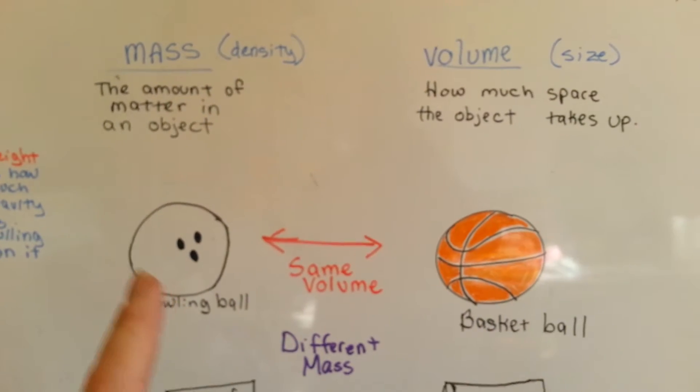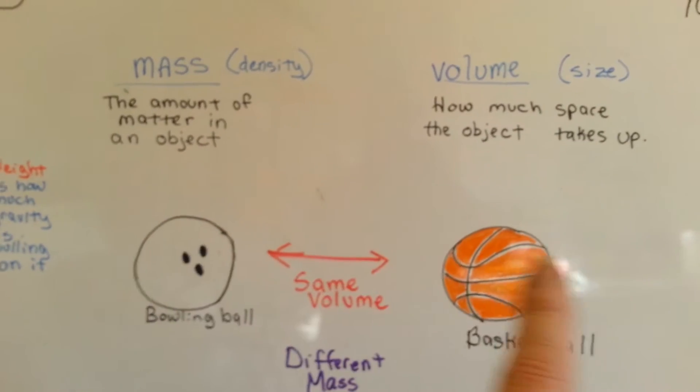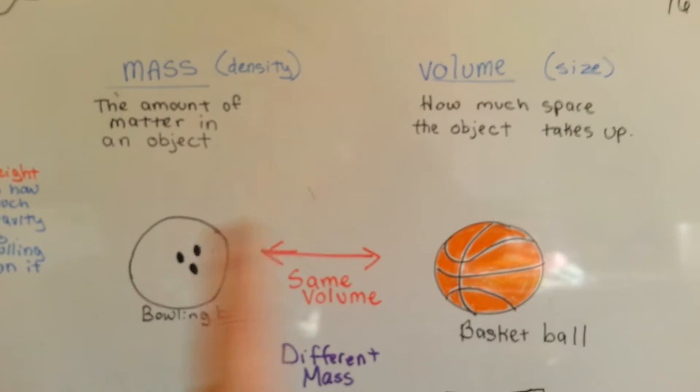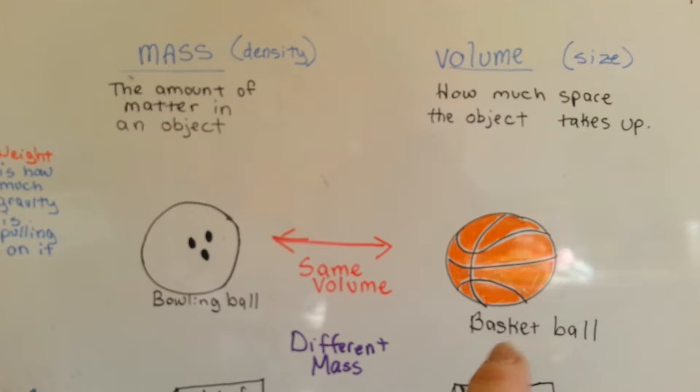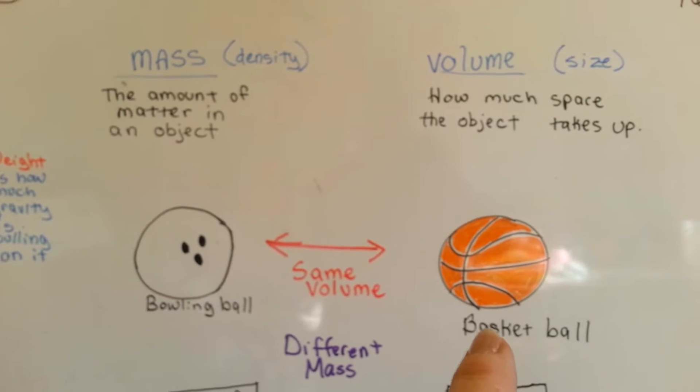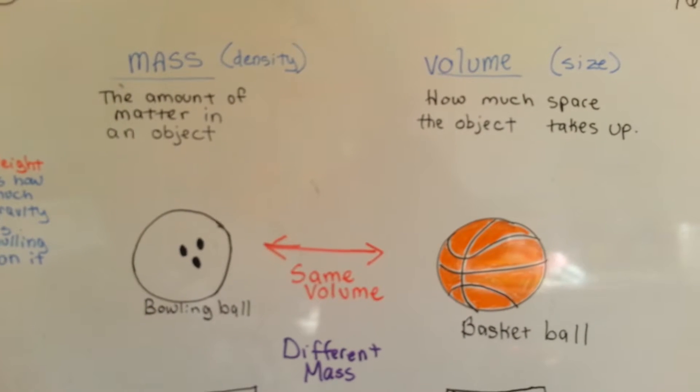We have a basketball and a bowling ball. They're the same size, they're the same volume, they take up the same amount of space, but a basketball has different mass than a bowling ball.